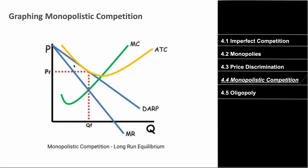In the short run, ATC is below the demand curve, meaning firms earn excess profit. In the long run, ATC glides over the demand curve and firms earn only a normal profit, just like perfect competition. So monopolistic competition firms make excess profit short run but only normal profit long run.